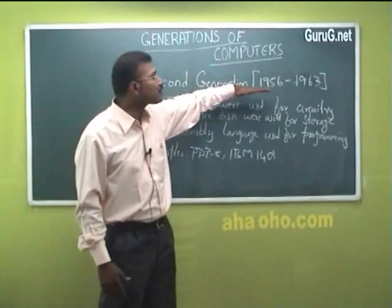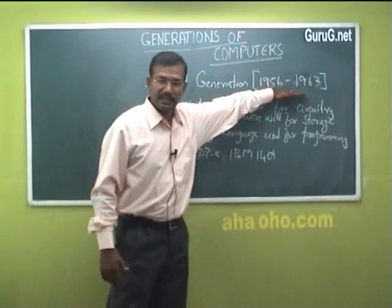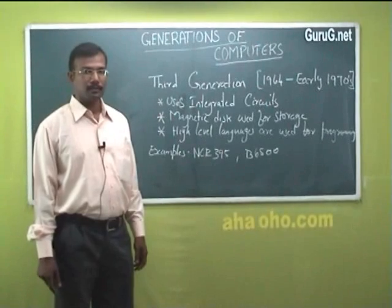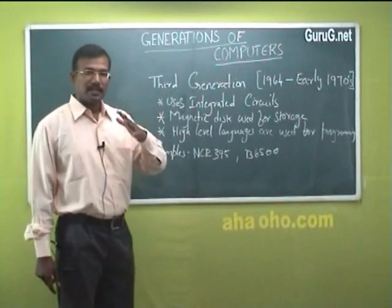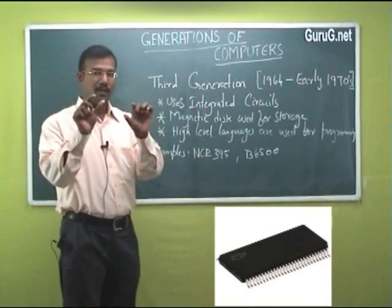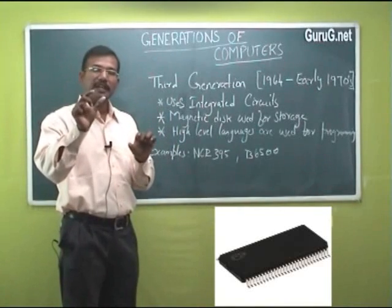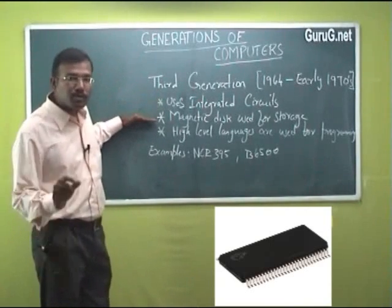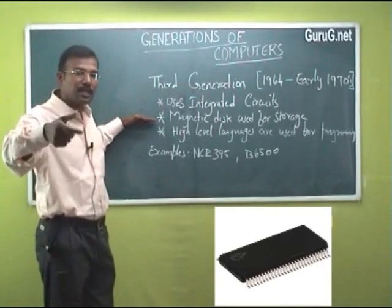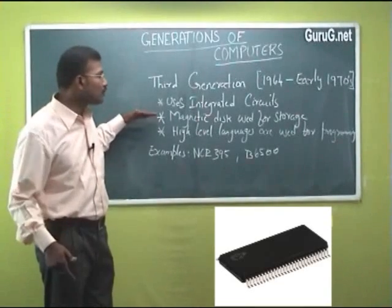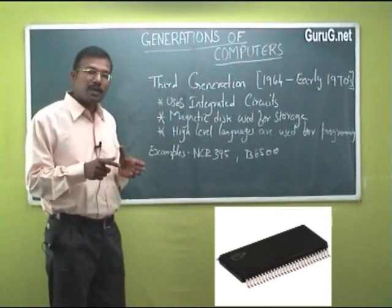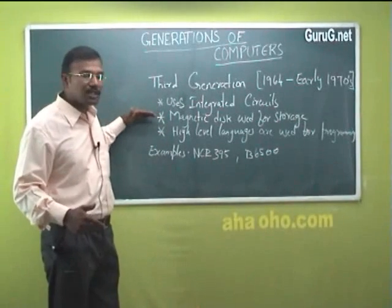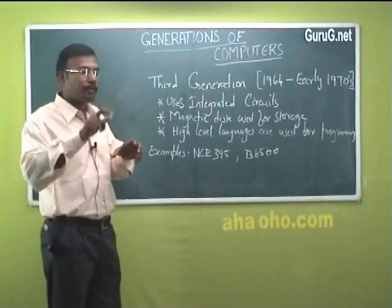The second generation lasted from 1956 to 1963. Now we will discuss the third generation computers. In the third generation, transistors were replaced with integrated circuits, abbreviated as ICs. Magnetic discs, magnetic tapes, and other storage forms were used. RAM was also introduced as an on-chip form of primary memory in the third generation.